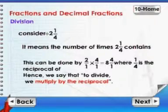Division: Consider 2 by 1 by 4. This means the number of times 2 contains 1 by 4. This can be done by 2 by 1 into 4 by 1 which is equal to 8 where 4 by 1 is the reciprocal of 1 by 4.